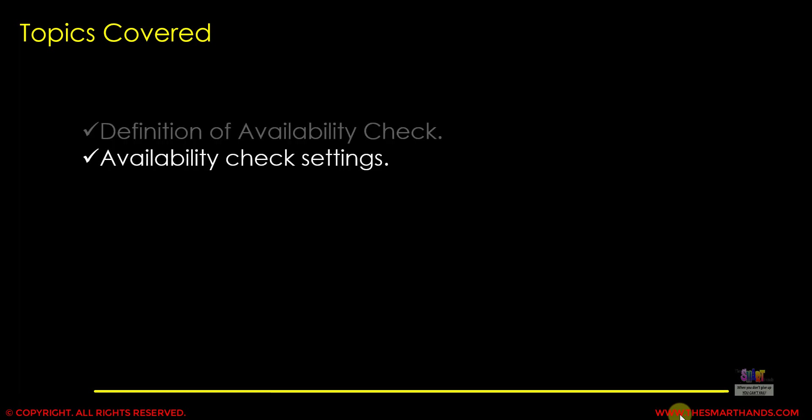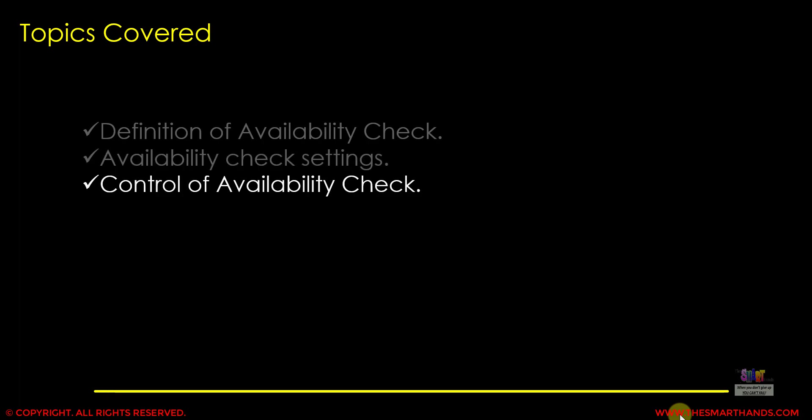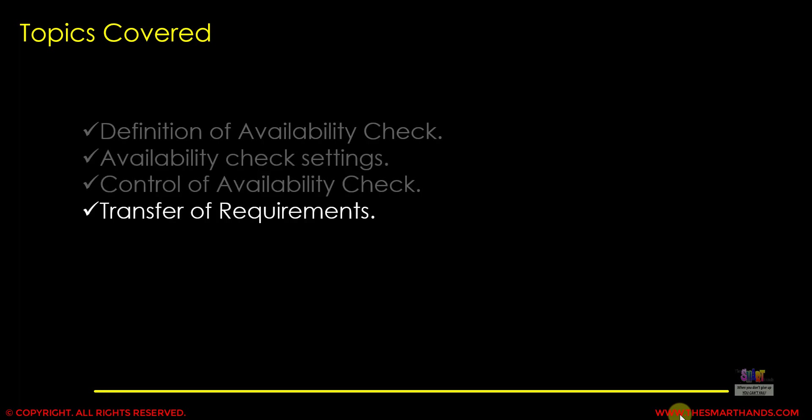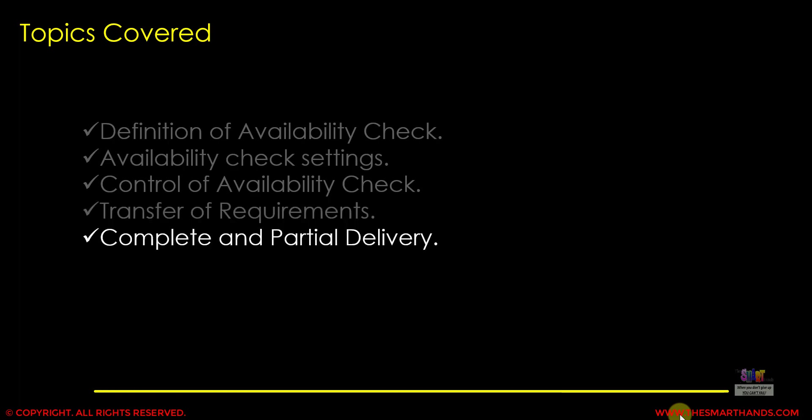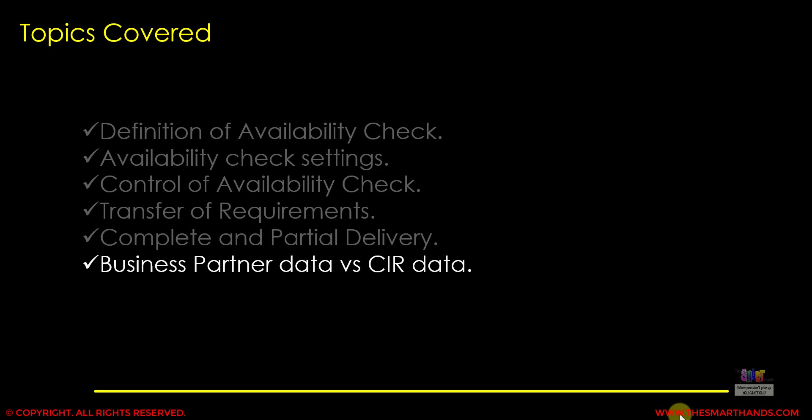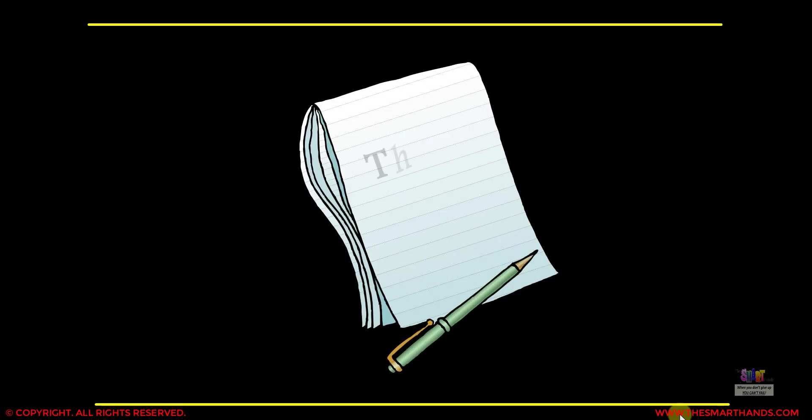That's all about this overview topic. In the next video we'll talk in more detail with scenarios and customizing. To summarize: we learned the definition of availability check, what settings to maintain in the material master, how to control the availability check, the meaning of transfer of requirements, the effects of complete and partial delivery setup, and the difference between data maintained in the business partner and CIR record. Thank you very much.